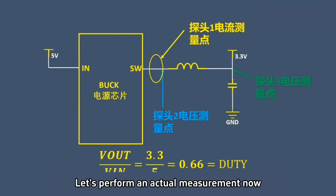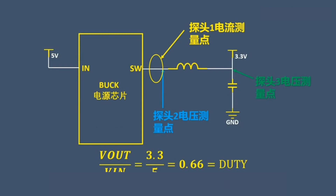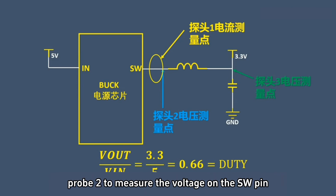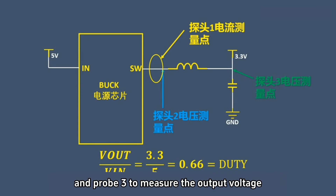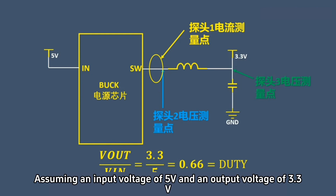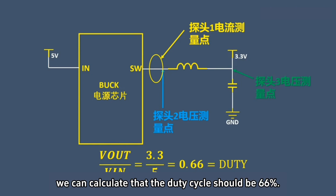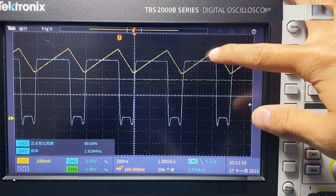Let's perform an actual measurement now. Use one current probe to measure the current flowing through the inductor, probe 2 to measure the voltage on the SW pin, and probe 3 to measure the output voltage. Assuming an input voltage of 5V and an output voltage of 3.3V, we can calculate that the duty cycle should be 66%.